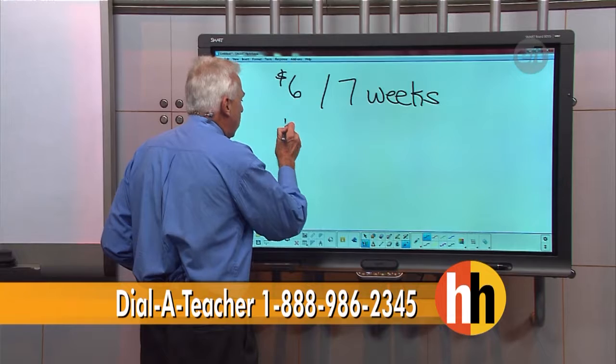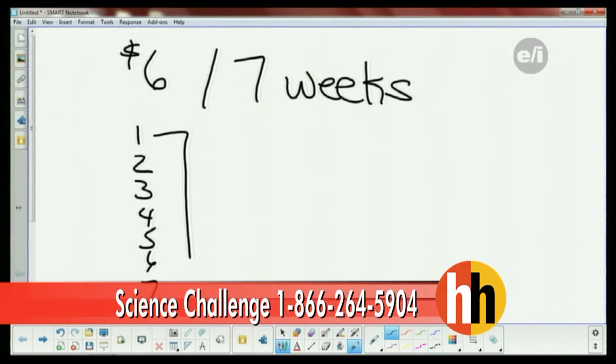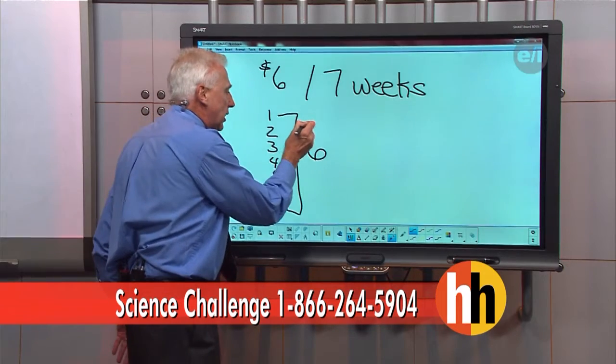All right. So, for each week—week one, week two, week three, week four, week five, week six, week seven—each one of these, it went down $6.